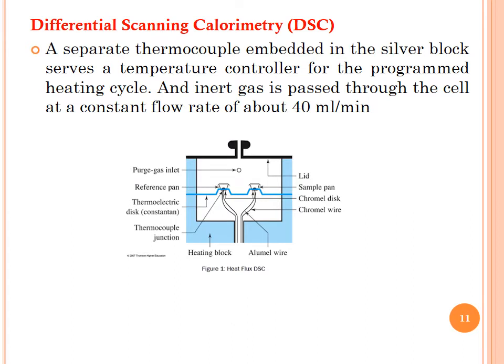Alumel wires attached to the chromel disk provide the chromel-alumel junction for independently measuring sample and reference temperature. A separate thermocouple embedded in the silver block serves as the temperature controller for the programmed heating cycle. An inert purge gas is passed through the cell at a constant flow rate of about 40 mL per minute. The purge gas depends upon the nature of the sample — it may be nitrogen, carbon dioxide, or argon.